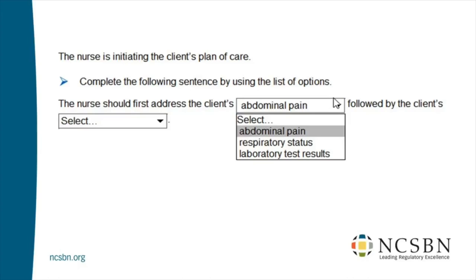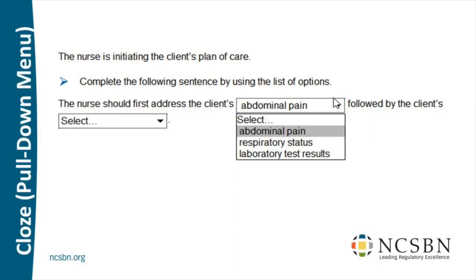We're now approaching halftime in the case study with item three, which looks quite different from anything on today's exam. The nurse is initiating the client's plan of care: 'Complete the following sentence by using the list of options.' We see pull-down menus — the nurse should first address the client's [dropdown], followed by the client's [same dropdown]. Formally, testing professionals call it a 'cloze pull-down menu' — cloze with a Z, a German term — but 'pull-down menu' works fine.